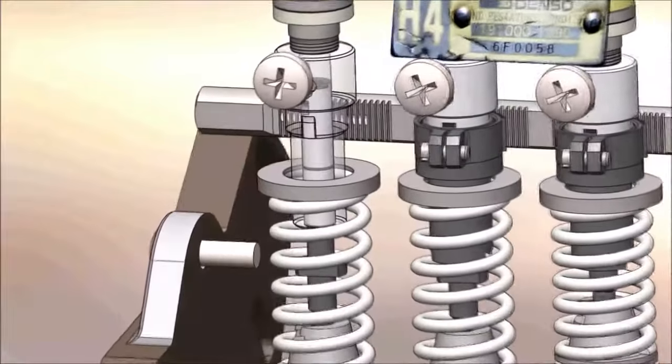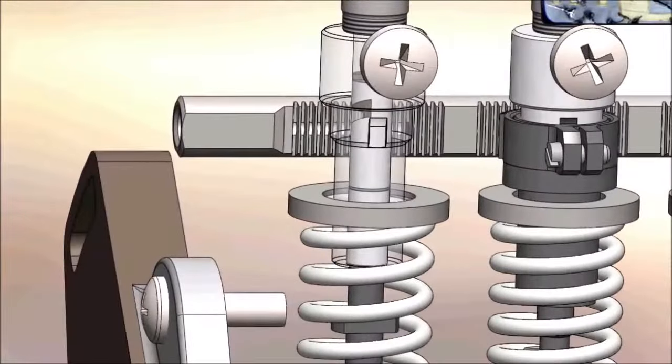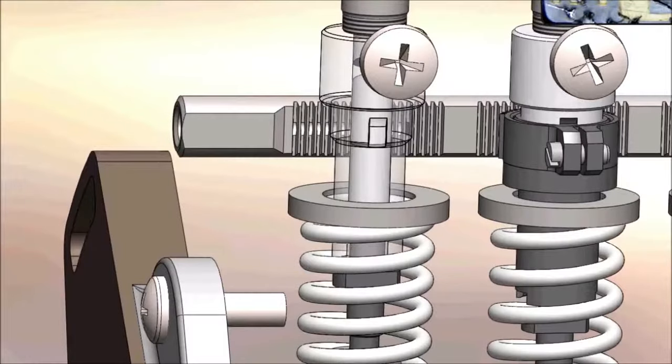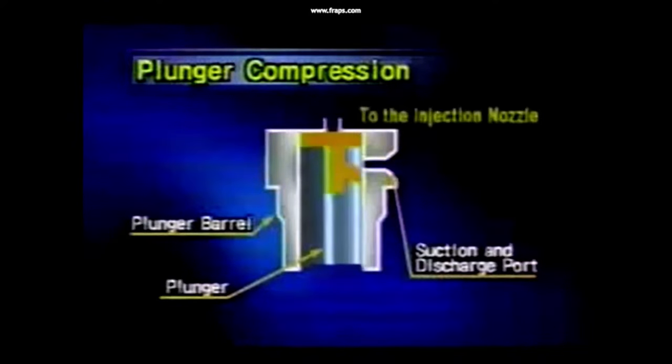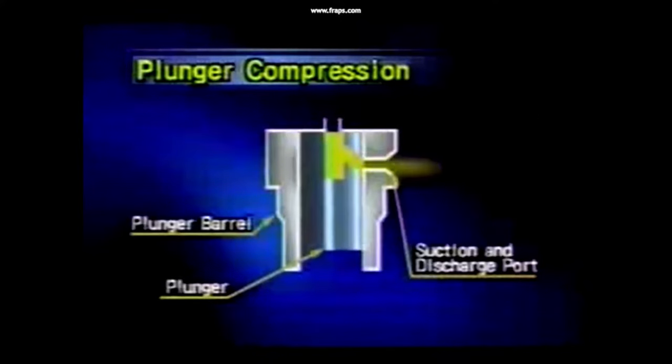Our stroke begins when the plunger is at the bottom of the stroke. At the bottom of the stroke, fuel rushes in above the plunger. As the plunger moves up, our plunger covers the spill port creating pressure, and pressure is relieved once the helix cut passes through the spill port.